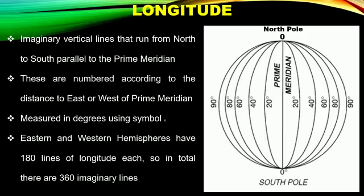Now we come to Longitude. Longitude lines are imaginary vertical lines that run from North Pole to South Pole, parallel to the Prime Meridian. These are numbered according to the distance to East or West of Prime Meridian. It is measured in degrees. Eastern and Western Hemispheres have 180 lines of longitude each, so in total there are 360 imaginary lines.